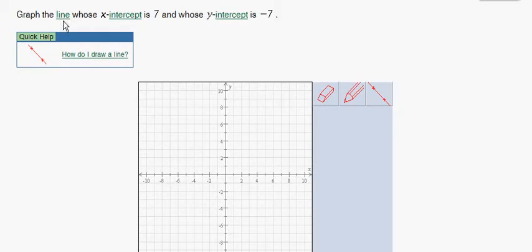And so in our problem here, it tells us we're going to have an x intercept of 7. So we'll simply take our pencil and we'll plot an x intercept. Notice that that's on the x axis and it's going to be positive or to the right of the origin.